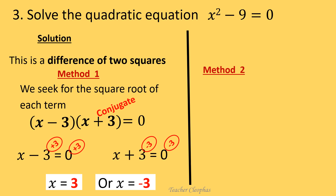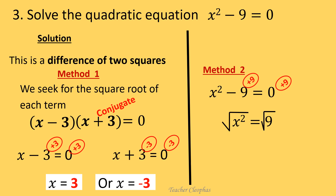Let's have our second method. x squared minus 9 equals to zero. We can simply add 9 on both sides so that we are left with x squared equals to 9. Then we take the square root on both sides. The square root of x squared is x, and the square root of 9 is either positive 3 or negative 3, which can be written as plus or minus 3, and that is our answer. If you compare the two answers, they are simply the same.